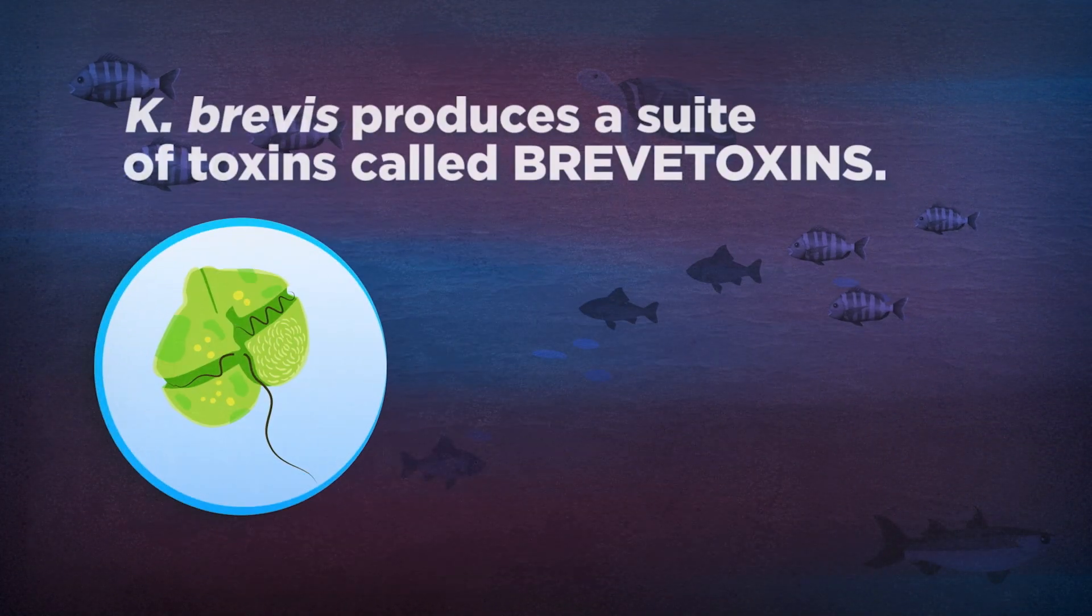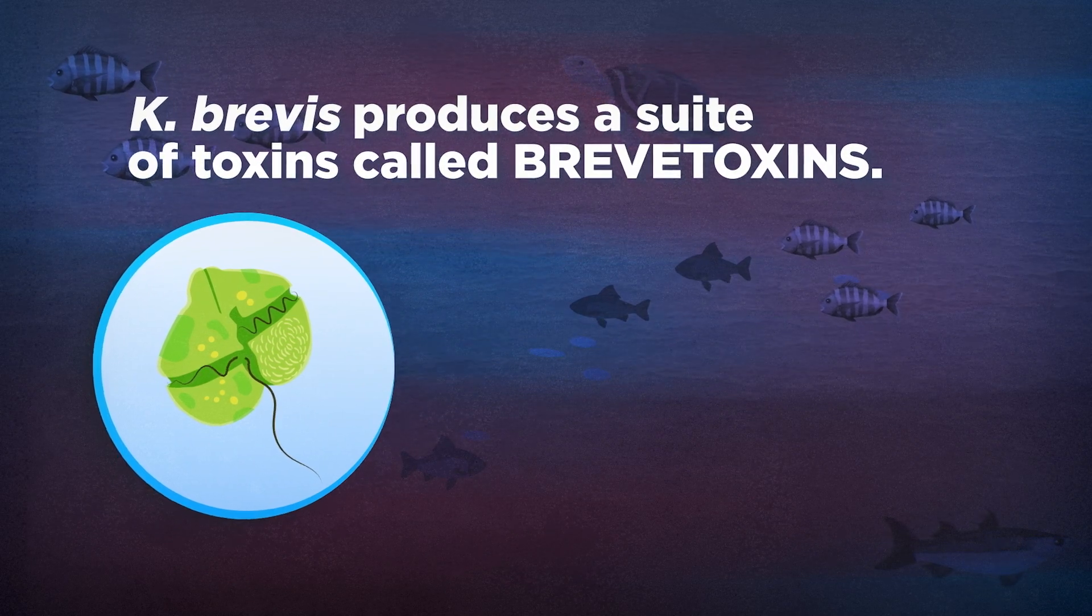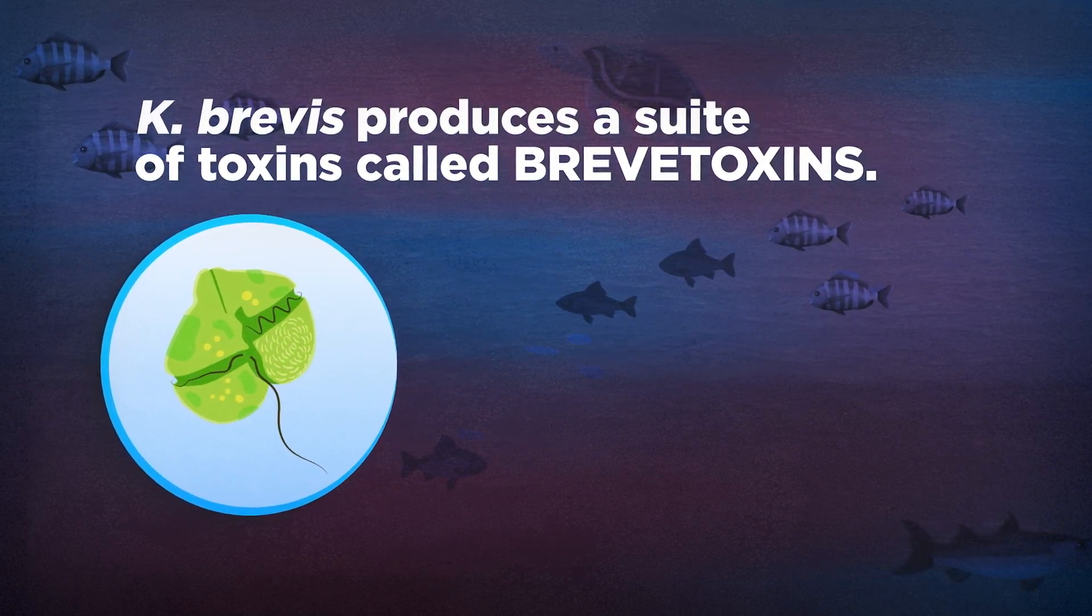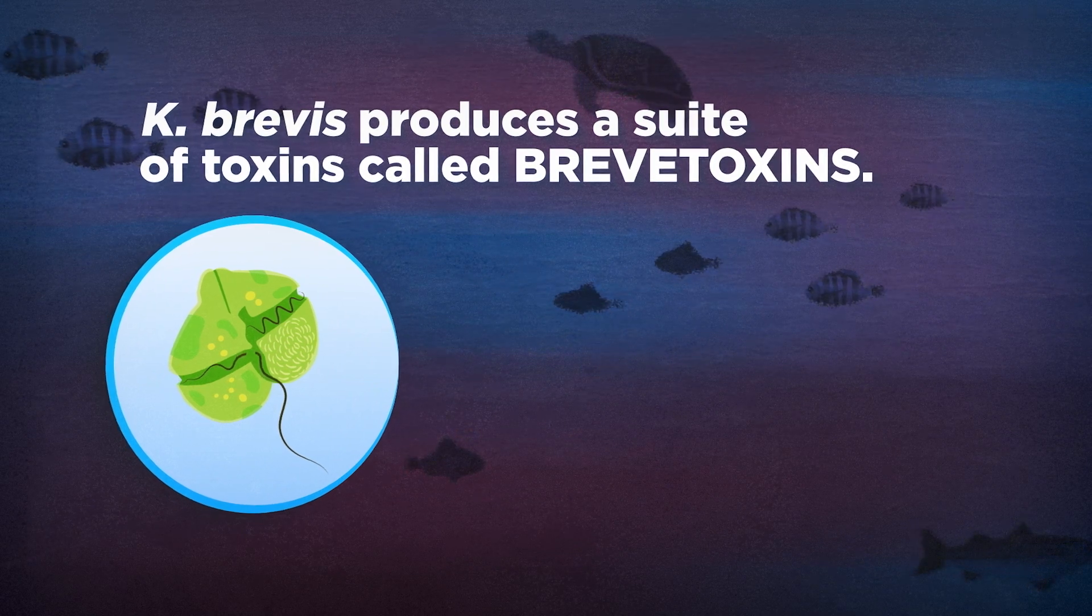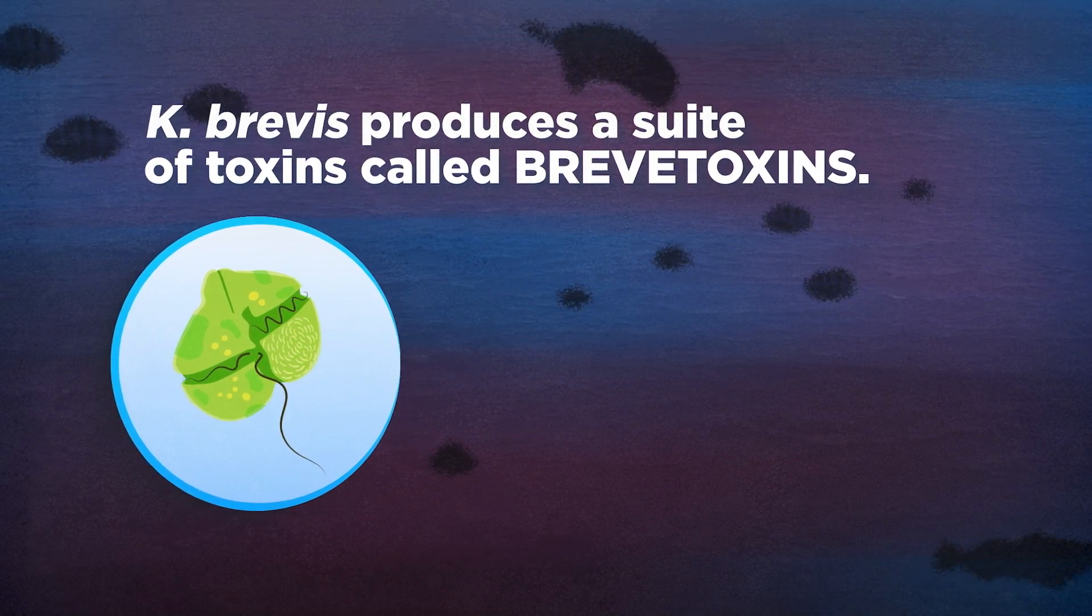K. brevis produces a suite of toxins called brevitoxins that can affect the central nervous system of fish and other marine life, such as seabirds, sea turtles, and marine mammals, causing these animals to become sick and die.